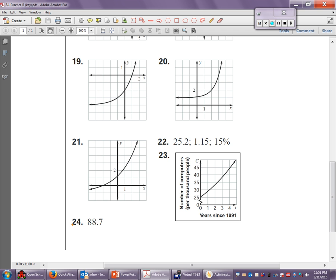The problem was talking about the number of computers per 100 people. I'm looking at numbers 22, 23, and 24 on last night's homework. I think people were struggling with that. You guys have this aversion to word problems. So check it out. The model it said in the problem was C equals 25.2 times 1.15 to the T.